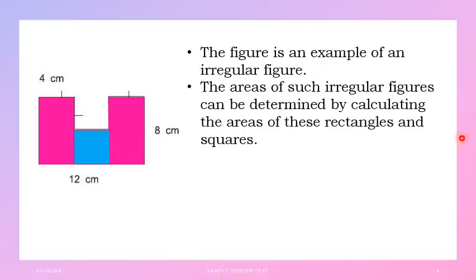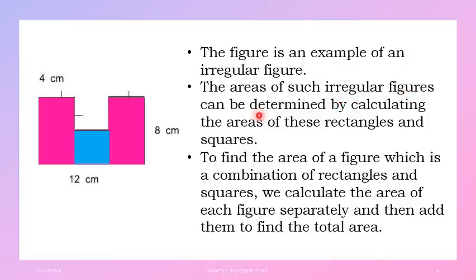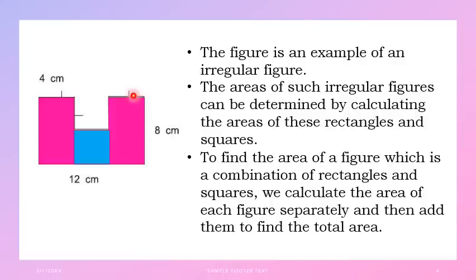How do we solve for the area of this irregular figure? The areas of such irregular figures can be determined by calculating the areas of these rectangles and squares. So, you first solve for the area of the first rectangle, then solve for the area of the second rectangle, then solve for the area of the square. To find the total area, calculate the area of each figure separately, and then add them to find the total area.